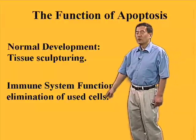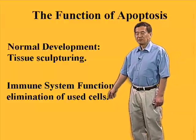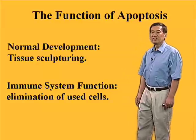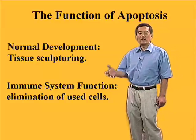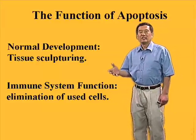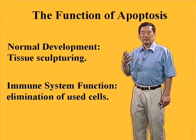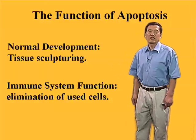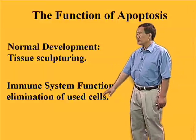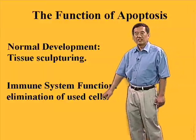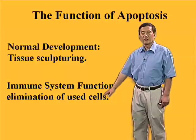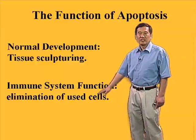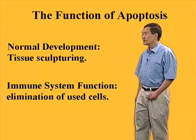Also, for the immune system function, after our body encounters a foreign antigen, either from bacteria or a virus, we will generate specific T cells — lots of T cells and B cells — to counter that antigen. But once that antigen is eliminated, these cells need to be eliminated from the body as well, and they undergo apoptosis.